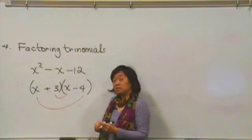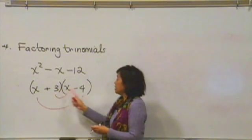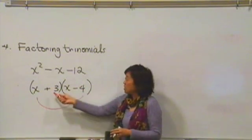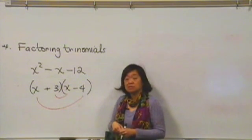And then just to check that that didn't mess up our last term, 3 times negative 4 is negative 12. So we just factored x squared minus x minus 12.